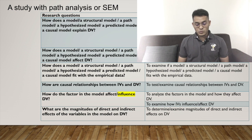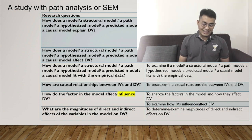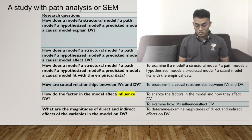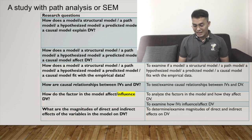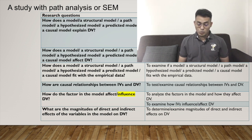The last research question: what are the magnitudes of direct and indirect effects of the variables in the model on dependent variable? And the objective is: to determine or examine the magnitudes of direct and indirect effects on dependent variables. That's all the research questions and research objectives you can use. I hope it will be useful for you. Good luck with your studies, and thank you for watching.